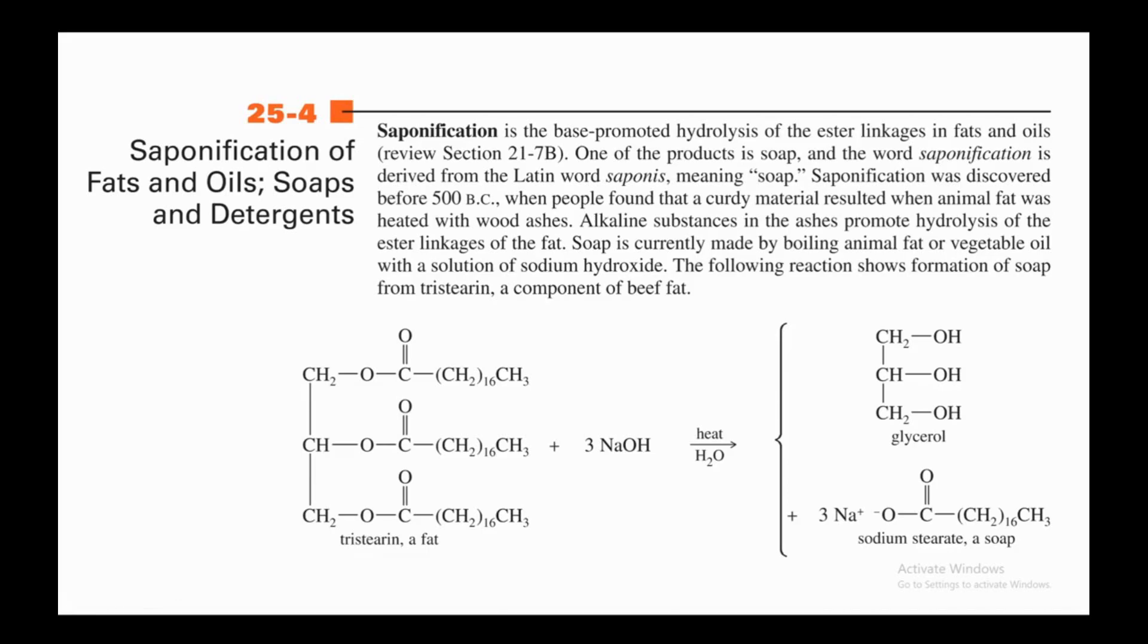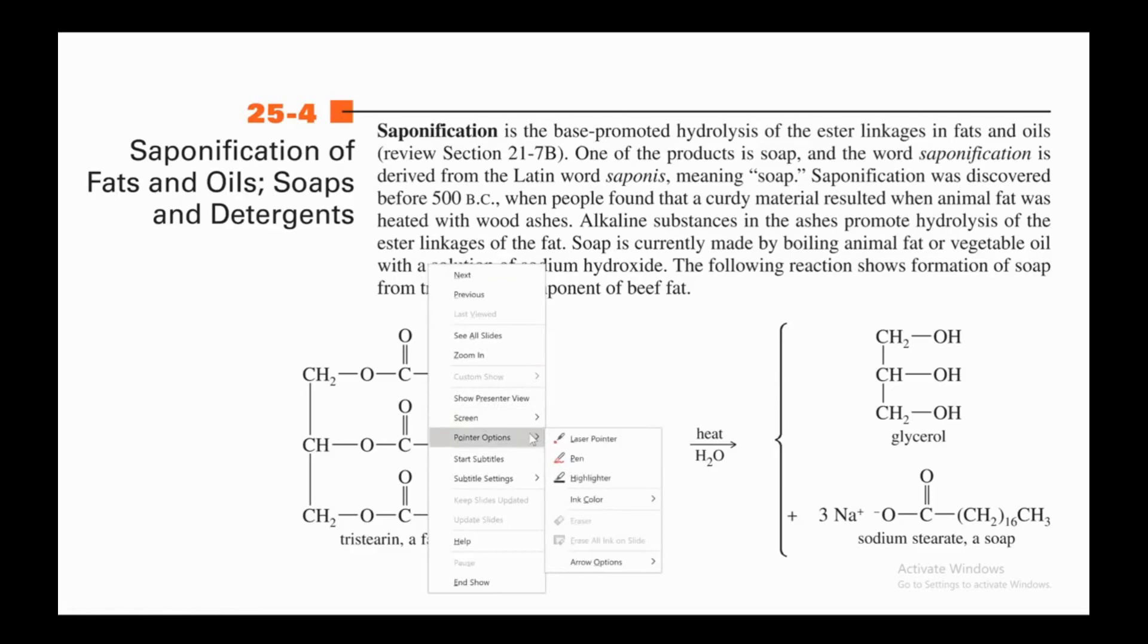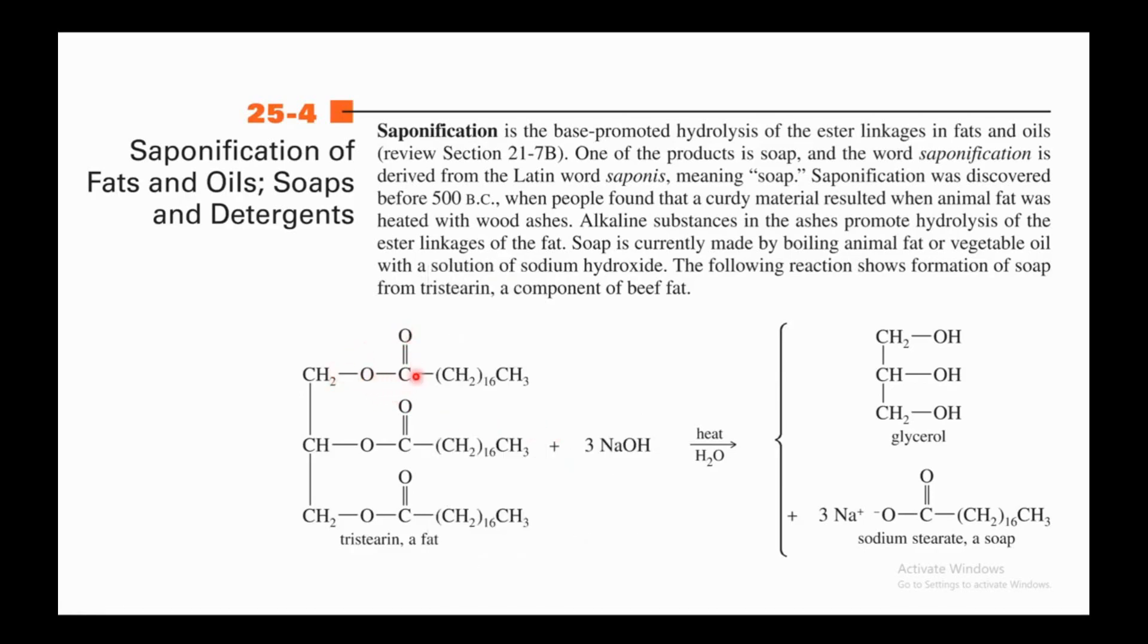In this video we will be talking about how soaps are prepared. Saponification is the base-promoted hydrolysis of the ester linkages in fats and oils. This is called ester linkage—this is oxygen and this is carbonyl group and oxygen, this is ester linkage. One of the products is soap, and the word saponification is derived from the Latin word saponis, meaning soap.